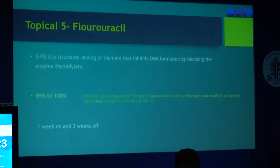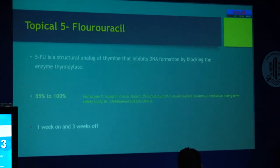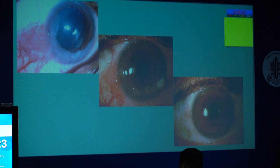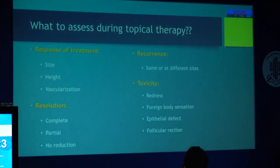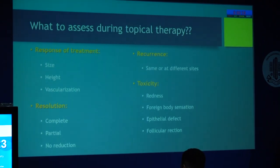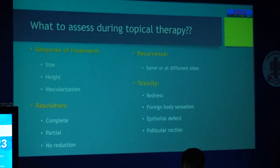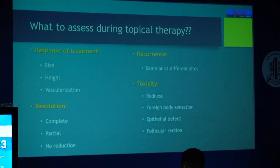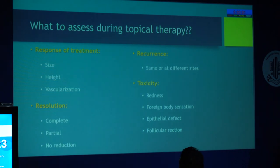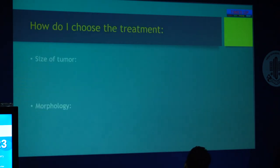Topical 5-FU is a fast drug with good success rate and cheap as well, giving good response in OSSN cases in all types except some nodular and nodular ulcerative. When giving topical therapy for OSSN, assess response every visit in terms of size, height, and vascularization — whether the tumor has completely dissolved, any recurrence, and importantly, toxicity monitoring in terms of redness, foreign body sensation, epithelial defect, or follicular reaction.